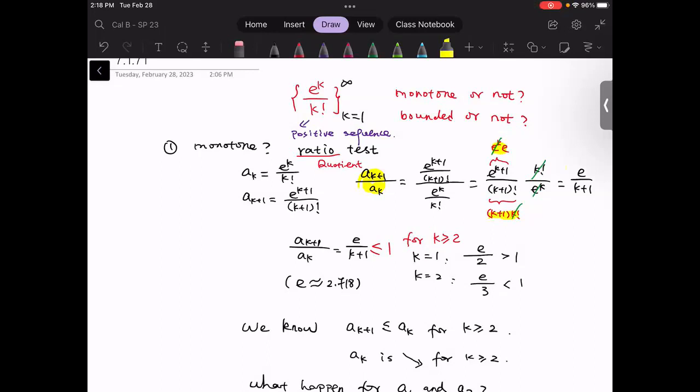Finally, this ratio becomes e divided by (k+1).